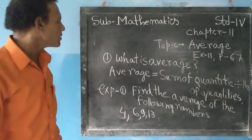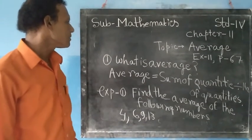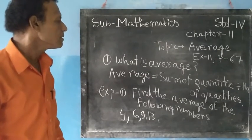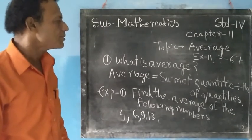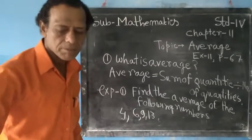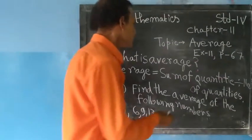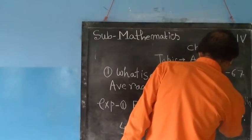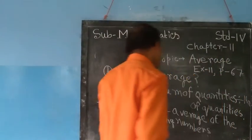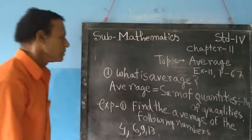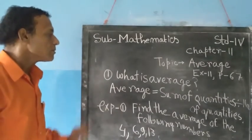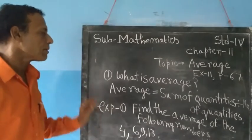What is average? Average is calculated by taking the sum of quantities and dividing by the number of quantities.